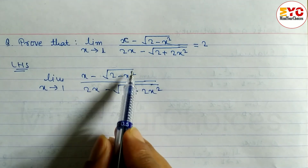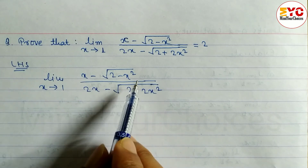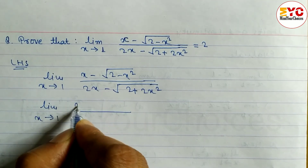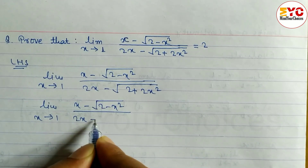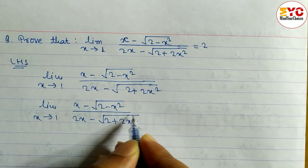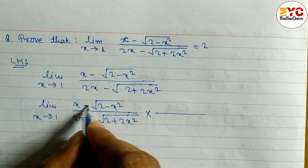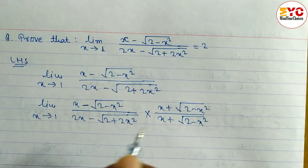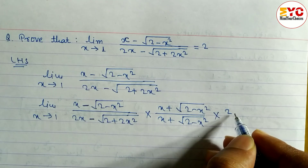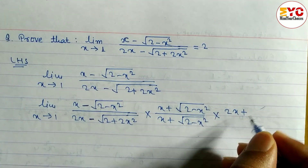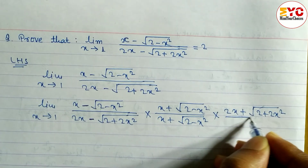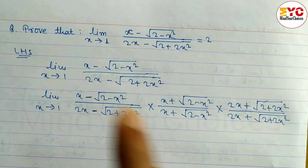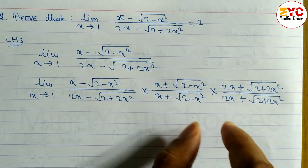We need to rationalize both the numerator and denominator to remove the roots. So we write: limit x tends to 1, same expression, and we rationalize. For the numerator, multiply by [x plus √(2 - x²)], and for the denominator, multiply by [2x plus √(2 + 2x²)]. So numerator rationalized gives x plus √(2 - x²), and denominator rationalized gives 2x plus √(2 + 2x²).